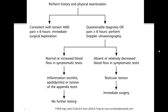You first perform a history and physical exam. If the patient has a consistent history of torsion and pain for less than six hours, this is an acute process and immediate surgical exploration has to be considered. If the patient has a questionable diagnosis or pain lasting greater than six hours, get the Doppler ultrasonography and look for blood flow. If there's decreased blood flow, this clues you into a diagnosis of testicular torsion — take the patient to the OR.